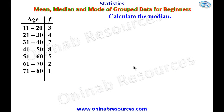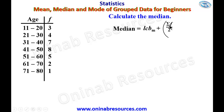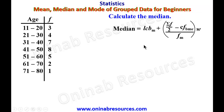Now we calculate the median. The formula for the median is: lower class boundary of the median class, plus open brackets — the sum of the frequency divided by 2, minus the cumulative frequency before the median class — all divided by the frequency of the median class, times w, which represents the width of the class interval. We need to add columns for lower class boundary and cumulative frequency.